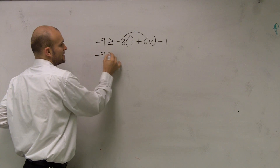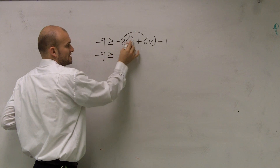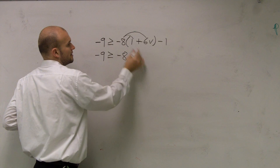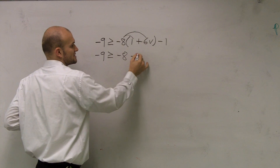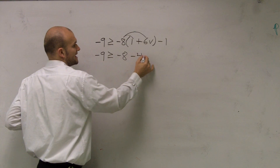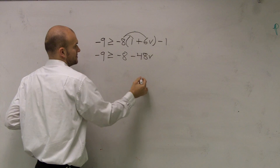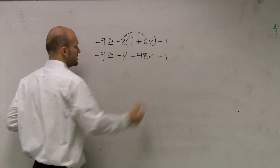Therefore, I have negative 9 is greater than or equal to — negative 8 times 1 is negative 8, and negative 8 times positive 6b is negative 48b. Then I still have this minus 1 here.